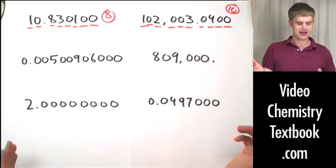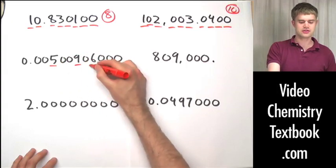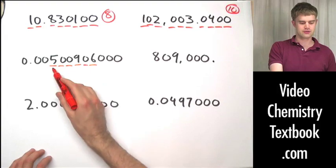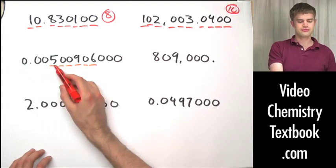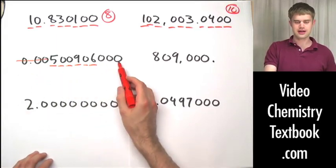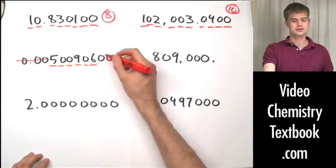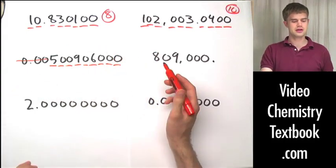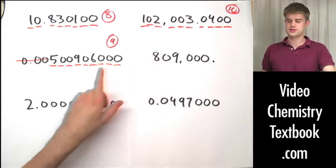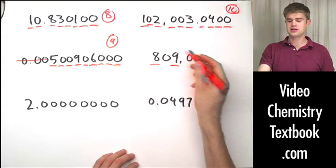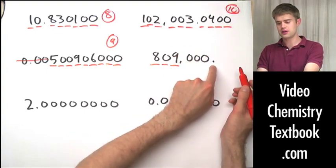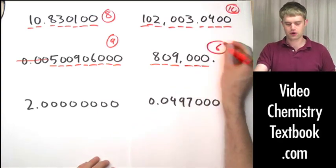Let's look at this long number. The 5, the 9, and the 6 are significant, which means any zeros sandwiched between them are also significant. Zeros coming to the left of significant numbers are never significant. There are zeros coming to the right — is there a decimal point? Yes, so the zeros to the right are significant. Nine total significant figures here. Then for another number: 8 and 9 are significant, sandwich zeros also count, and three zeros to the right are significant because of the decimal point. Six total.